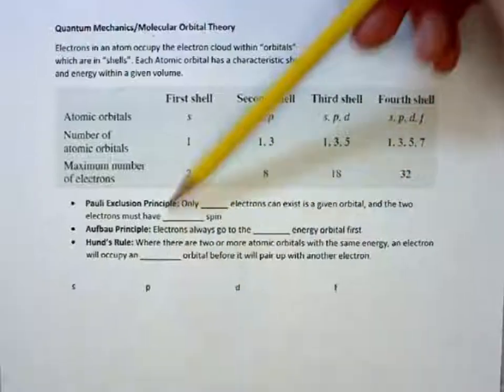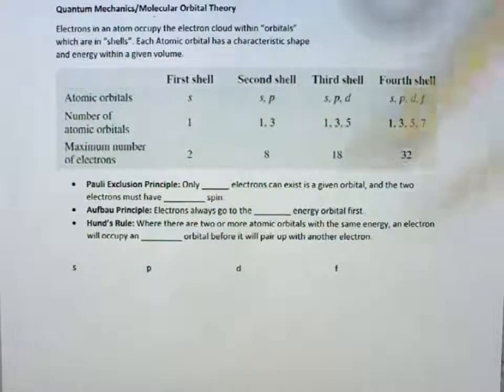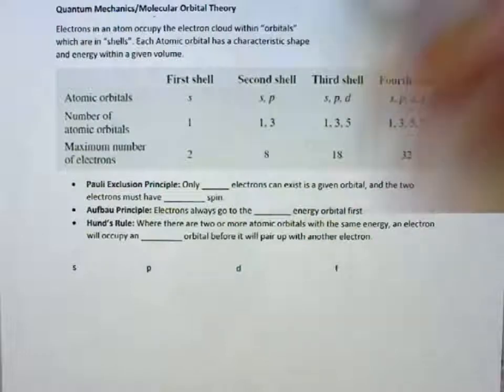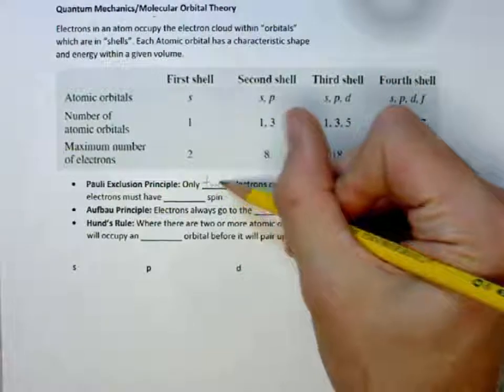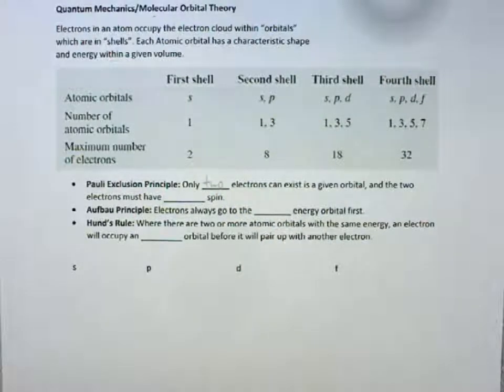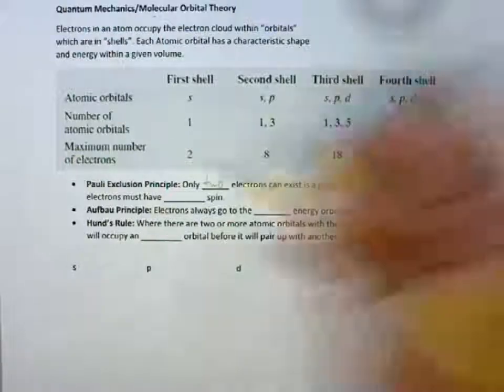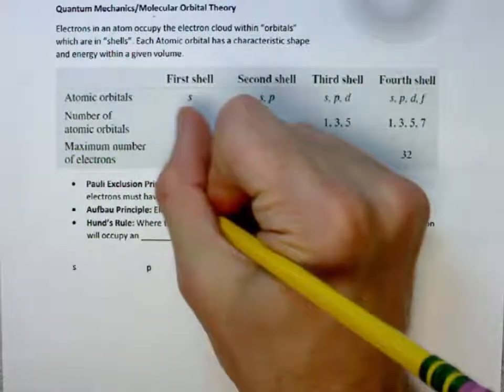There are three rules that exist. The first rule, the Pauli exclusion principle, states that only two electrons at a given time can exist in an orbital, and each electron must have opposite spin and cannot have the same spin in the same orbital.